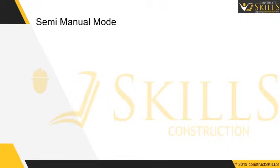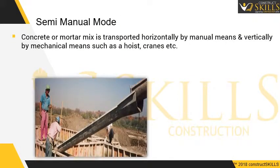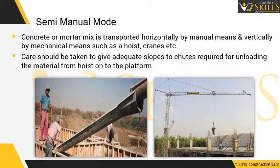In the semi-manual mode, for multi-story buildings, the concrete mix is generally transported horizontally by manual means and vertically by mechanical means such as a hoist or cranes. Horizontal movement takes place twice — at ground level and at slab level. Workers tend to prefer a high-slump mix for ease of placing. Care should be taken to give adequate slopes to chutes required for unloading material from the hoist onto the platform. Ensure worker crew size is adequate to place concrete effectively within the required time.